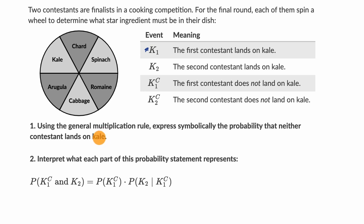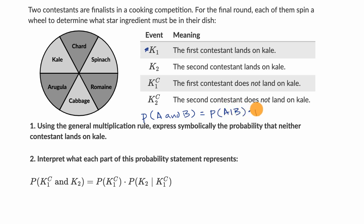Pause this video and see if you can have a go at this. The general multiplication rule states that the probability of two events A and B is equal to the probability of A given B, times the probability of B. Now, if they're independent events — if the probability of A occurring does not depend in any way on whether B occurred — then this simplifies: P(A|B) becomes just P(A), and you simply multiply their probabilities.